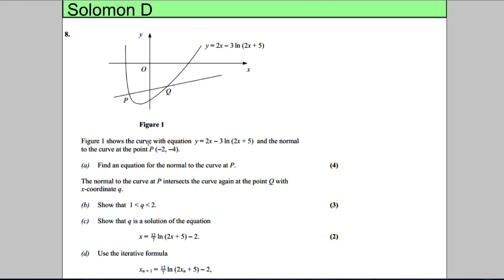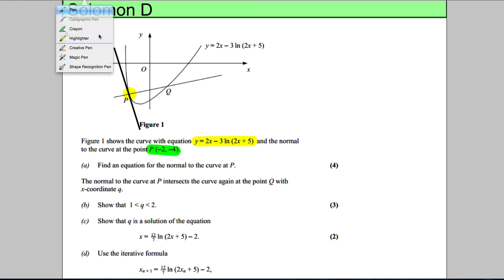In this question, figure 1 shows a curve with equation y = 2x - 3ln(2x+5), and the normal to the curve at the point P(-2, -4). So this is the normal to the curve at point P. The tangent would look something like that, and that's the normal to the curve. It asks us to find the equation of the normal to the curve at P.